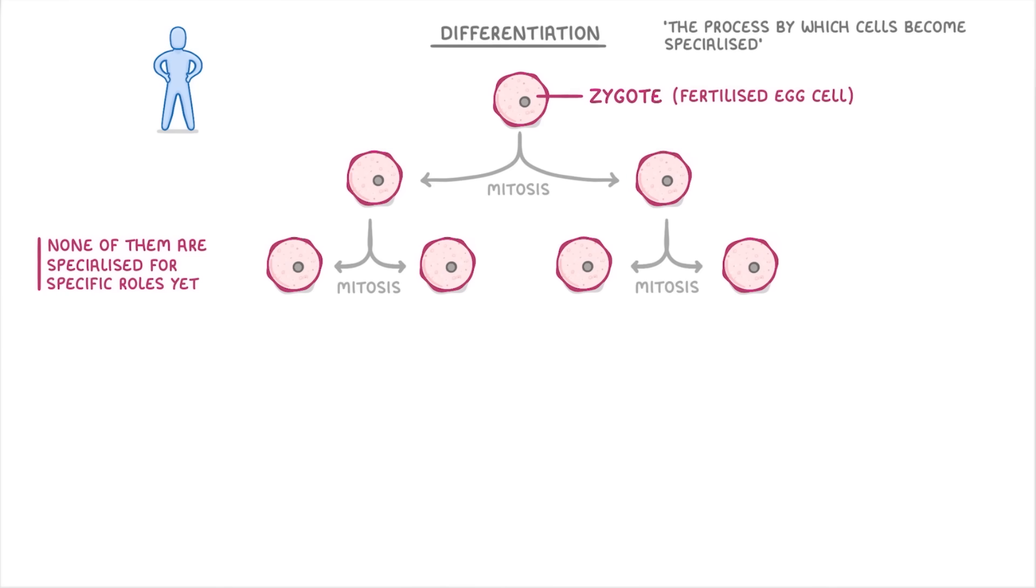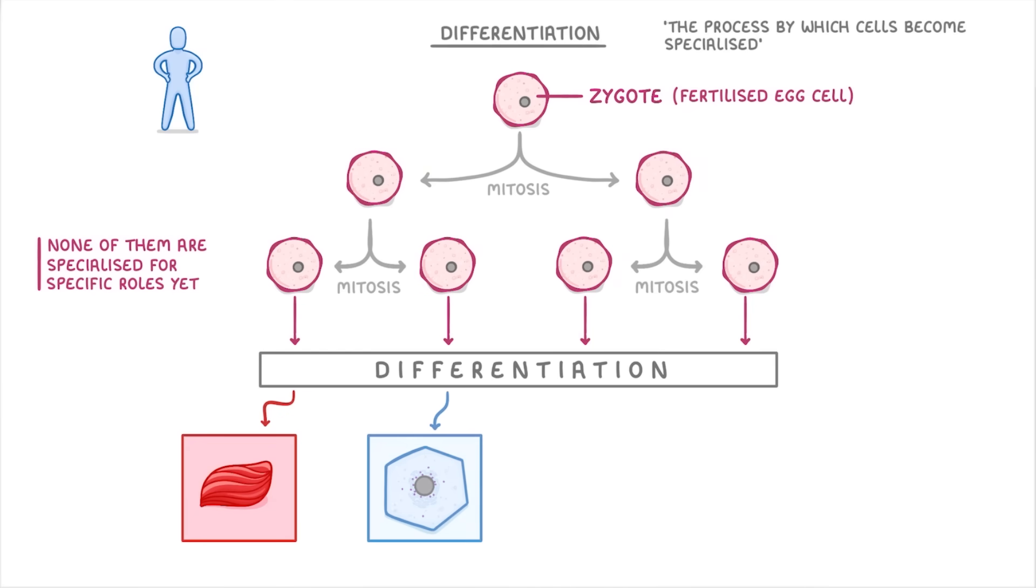So at some point, they have to undergo the process of differentiation that turns them into specialized cells, like a muscle cell, a skin cell, a nerve cell, or a red blood cell.